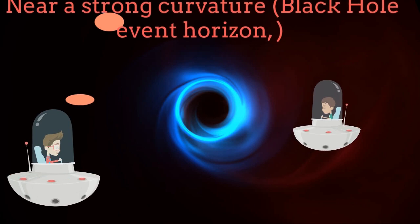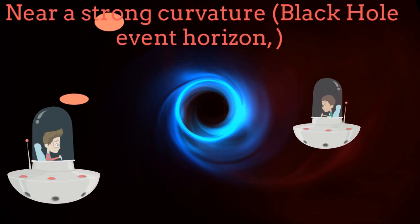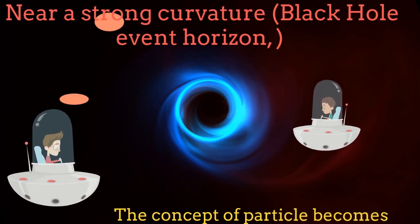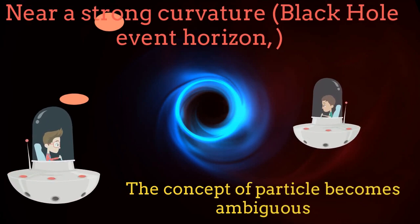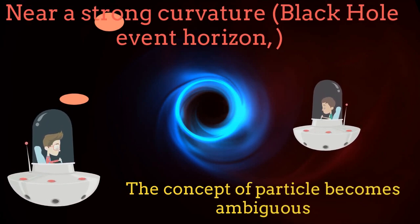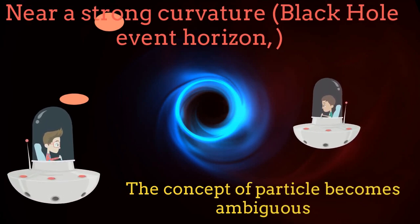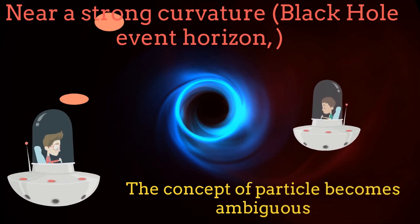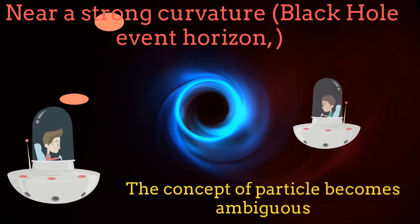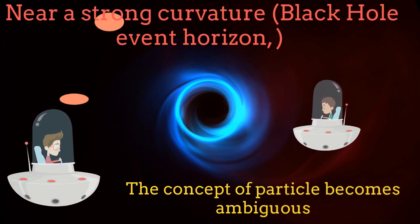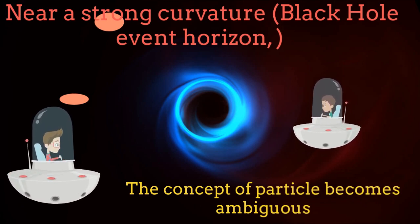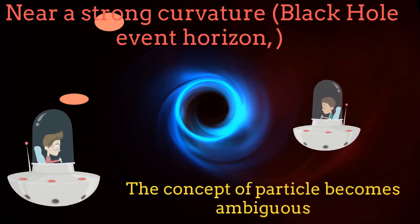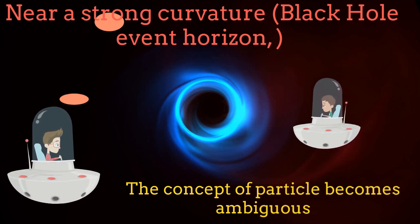"I can see particles coming out from the black hole." "I do not see any particle." When the curvature of the space-time is strong enough, which is the case when we have black holes, the concept of particles is ambiguous.